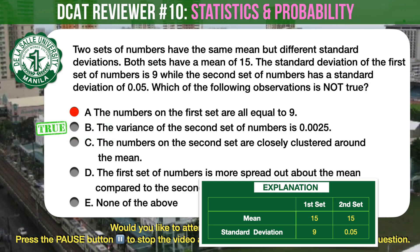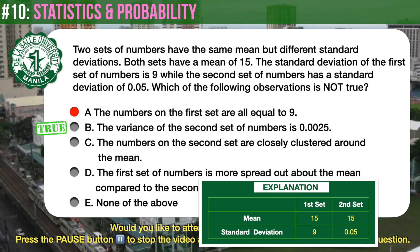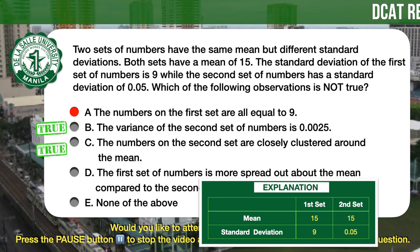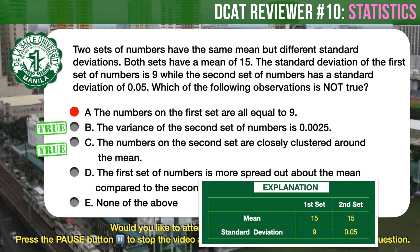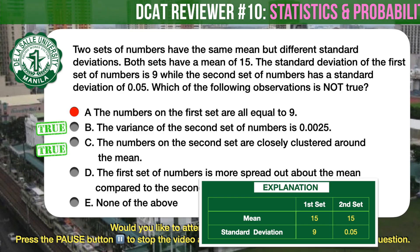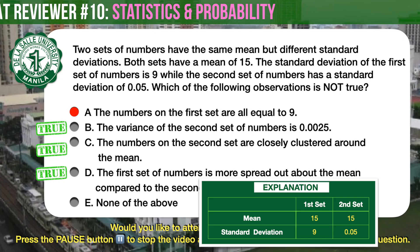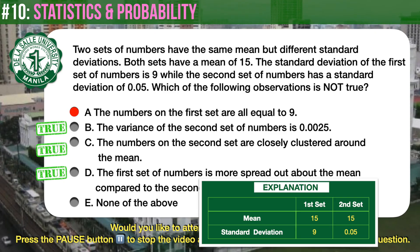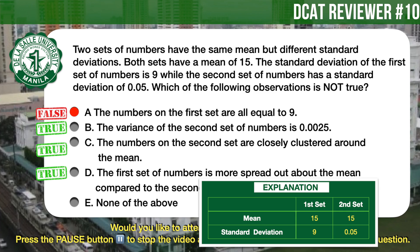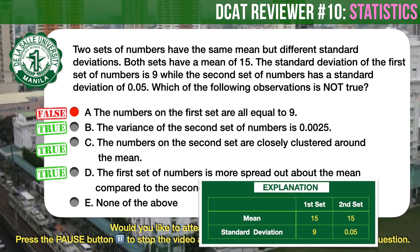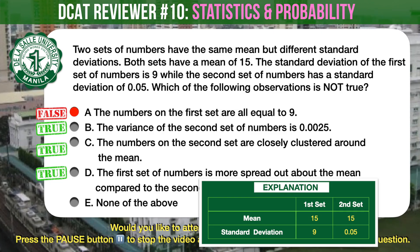Answer choice B is true — variance is the square of the standard deviation; 0.05 squared is indeed equal to 0.0025. C is also true: the numbers on the second set are closely clustered around the mean, since the standard deviation is only 0.05, meaning results are very close to the mean. D is likewise true: the first set is more spread out around the mean, since the standard deviation is 9. A, on the other hand, is not true — having a standard deviation of 9 does not mean the values are all equal to 9. In fact, the problem does not tell us the actual values at all.